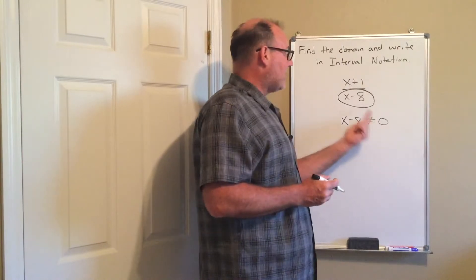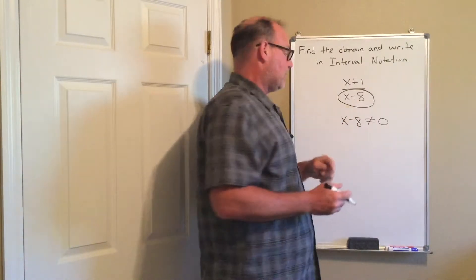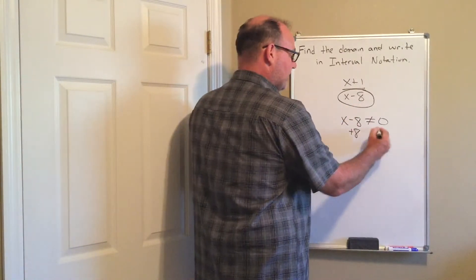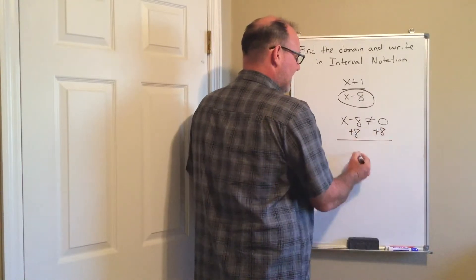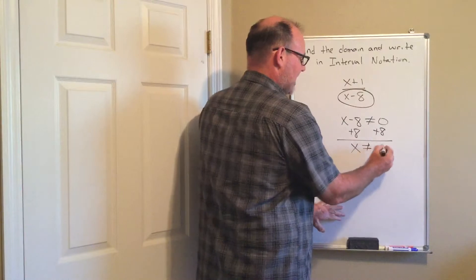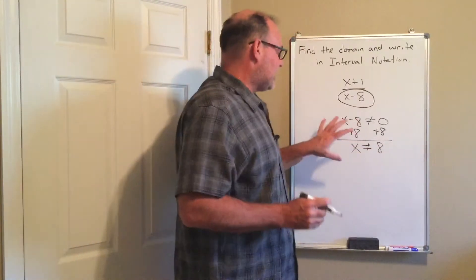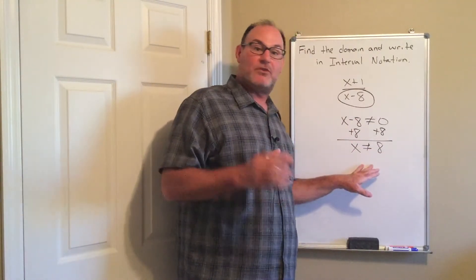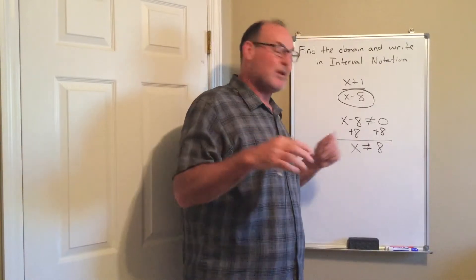If I have 0 in the denominator that is bad. So now I'm going to add 8 to both sides and I get that the value that x cannot be is 8. So this is the limitation of the domain. There's only one value in the universe that we can't use.